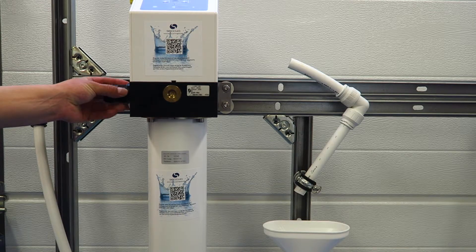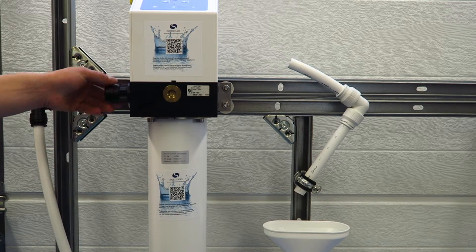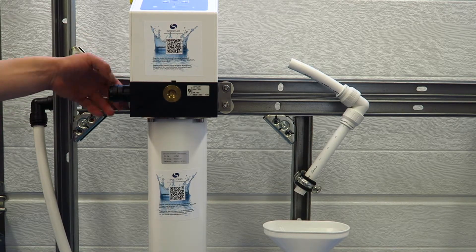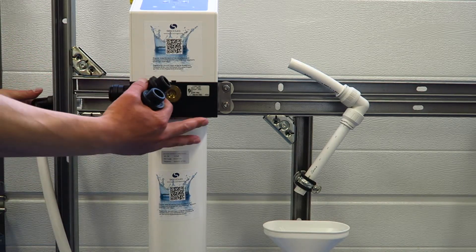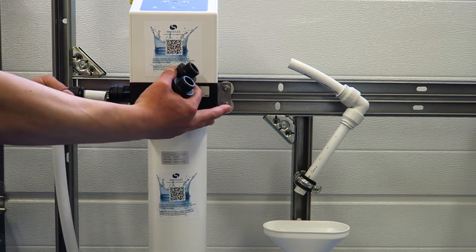Install the water line on the feed side, on the left of the unit. Push the pipe into the feed.